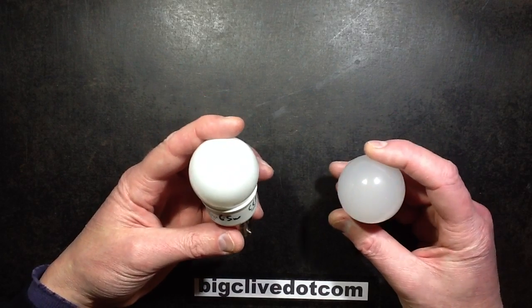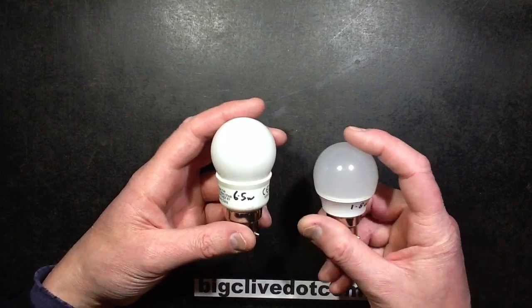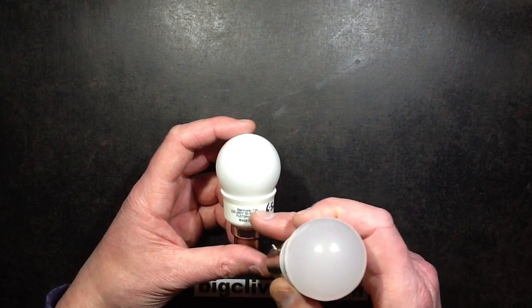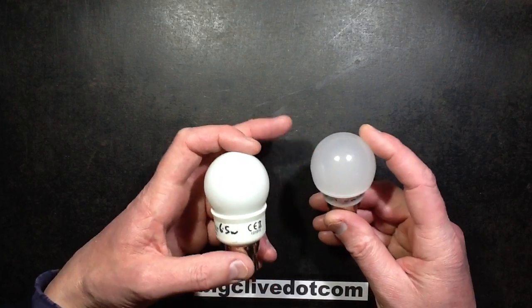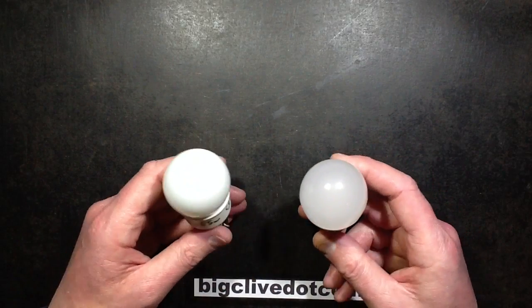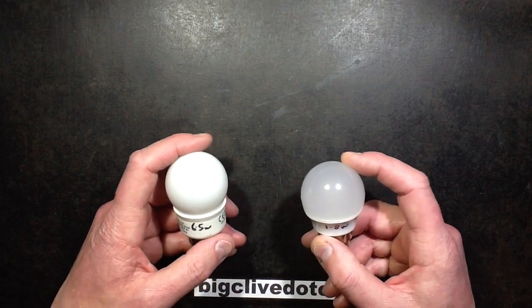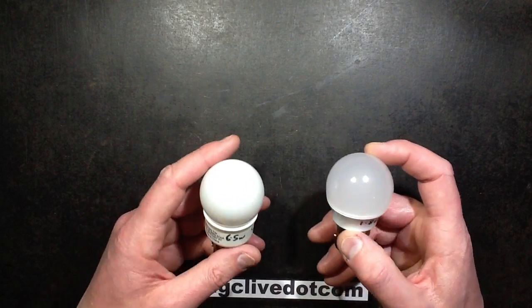So I changed the 6.5 watt lamp, that's what this one measures at, it says 7 watt but measures 6.5. I changed it for the 1.8 watt LED lamp which was just the first one that came to mind, plugged it in and thought that's really bright, that's so much brighter than this one.